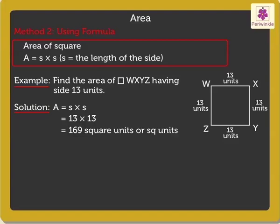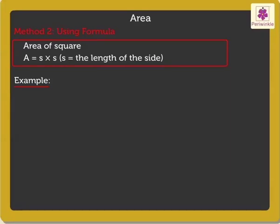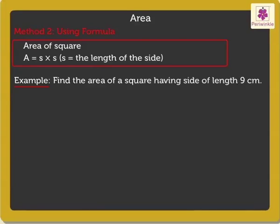Now let's solve one more example. Find the area of a square having a side of length nine centimeters. Area equals side into side, which is equal to nine into nine, which is equal to eighty-one square centimeters.